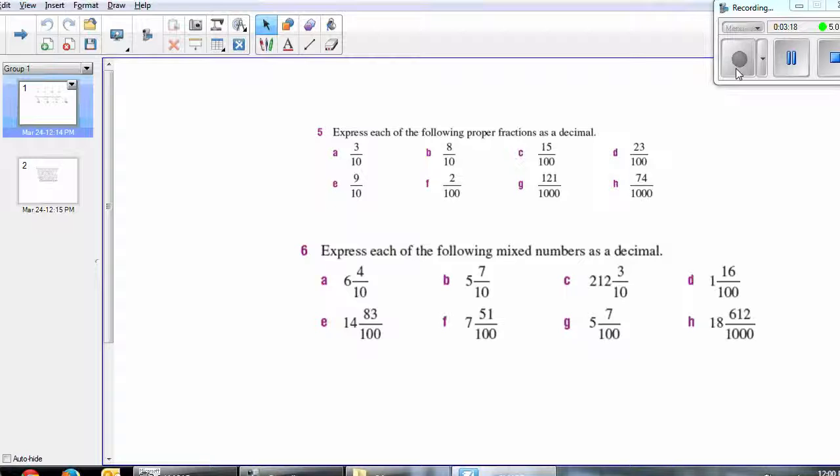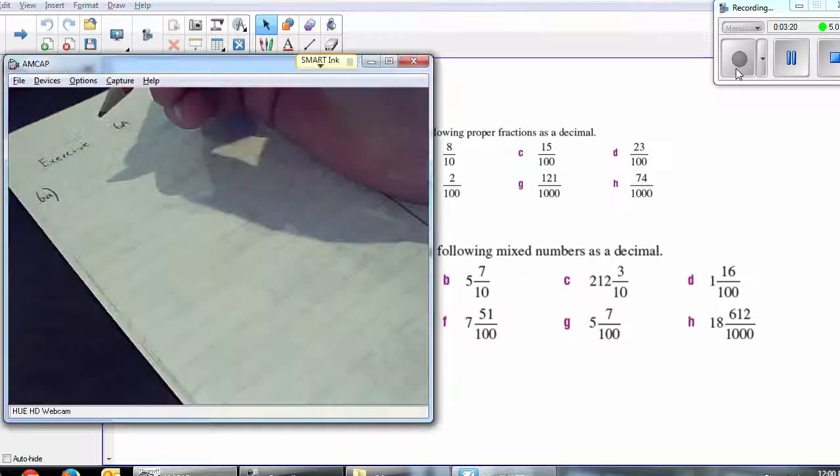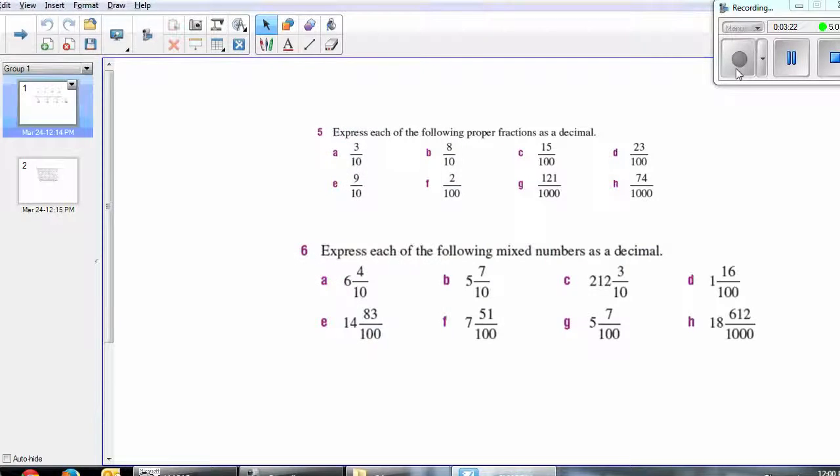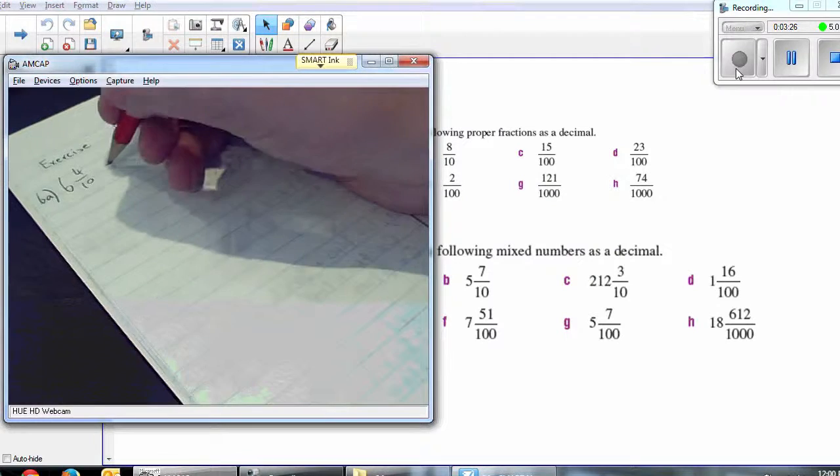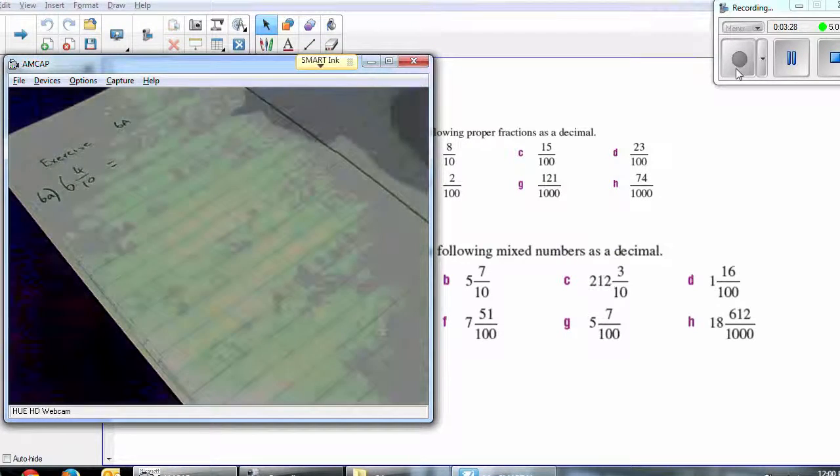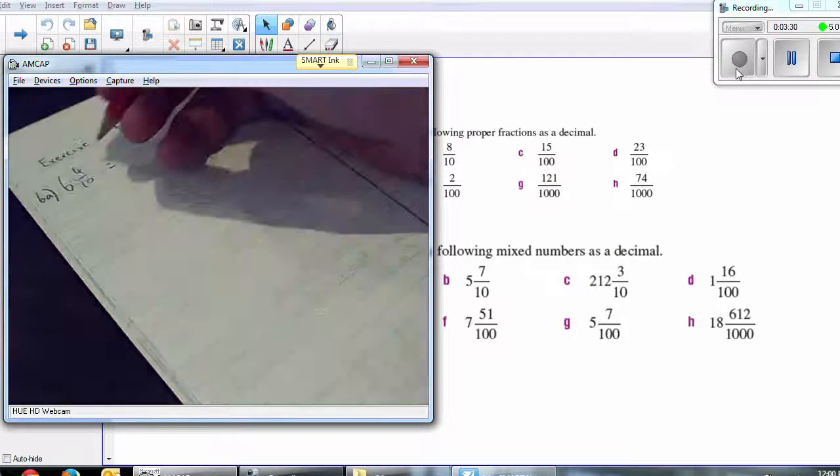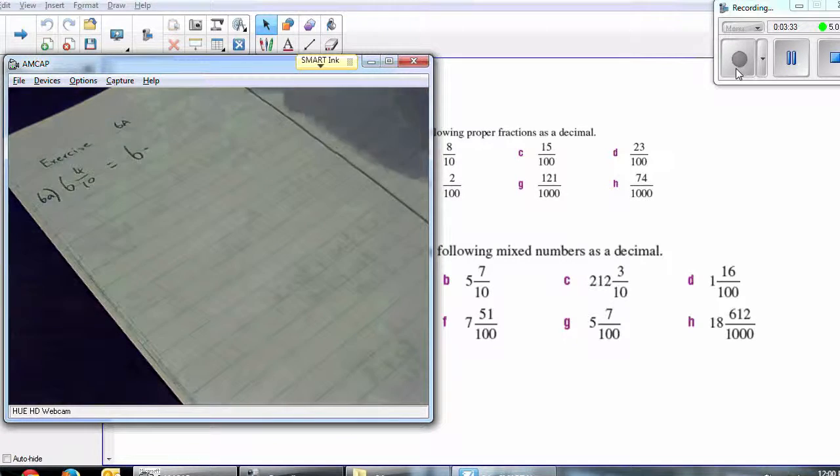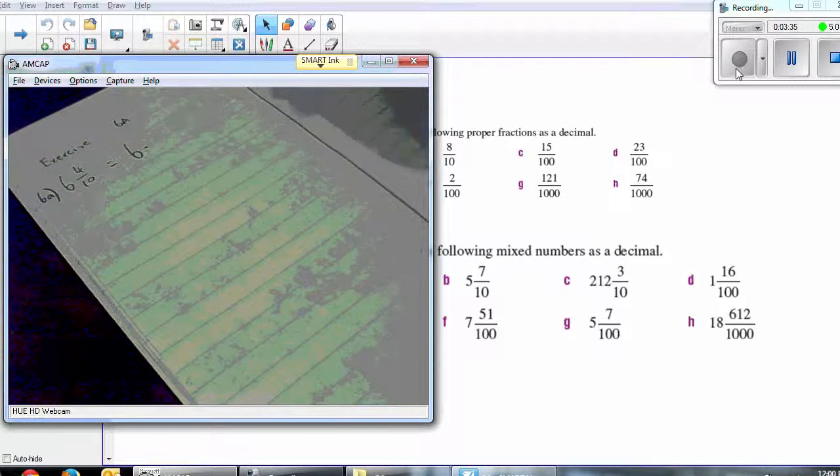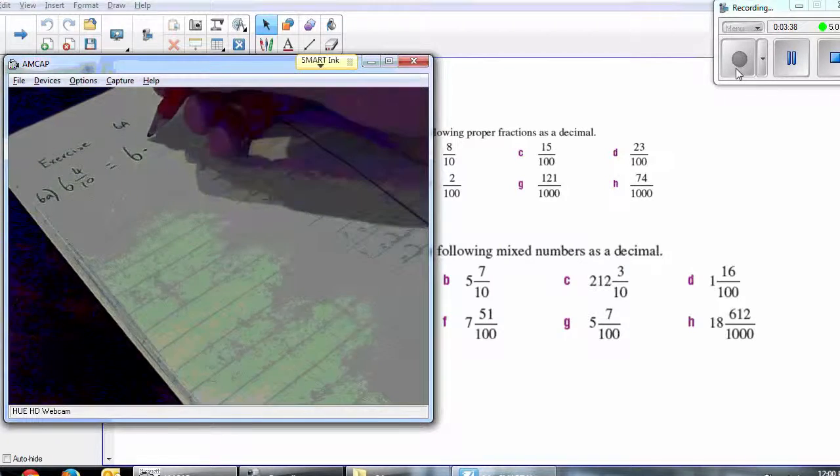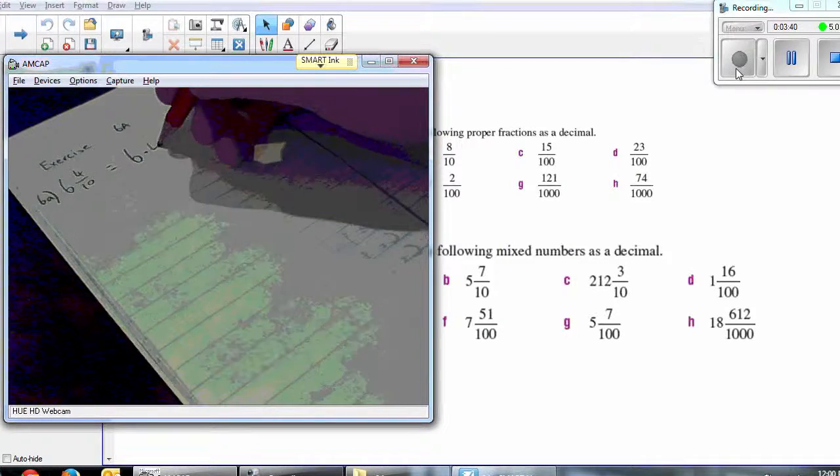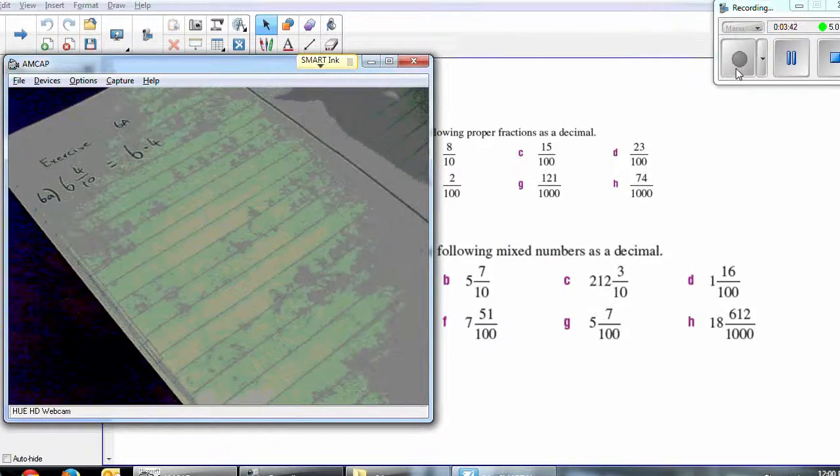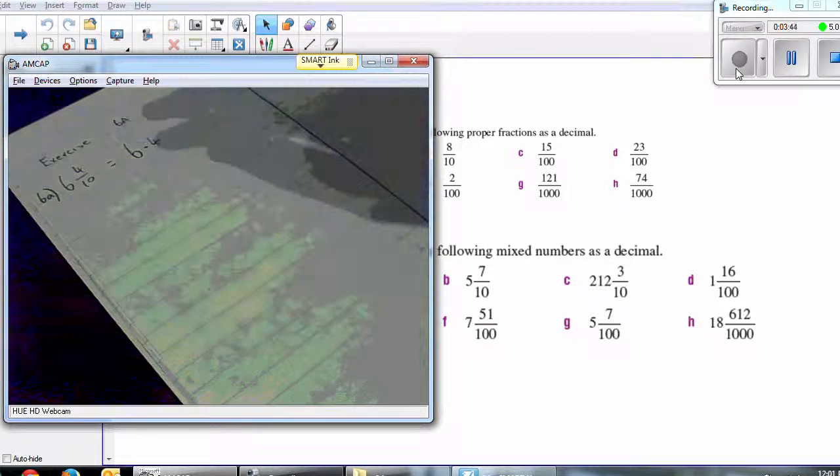Let's just have a look at 6a, and 6a is six and four tenths. This stuff is really quite simple once you get to know it. So we have six whole numbers, so we obviously have a six, and then our decimal point, and then we have four tenths. Well, tenths lie straight after the decimal point, so it's going to be 6.4. Pretty simple.